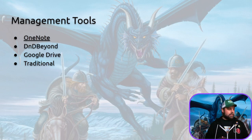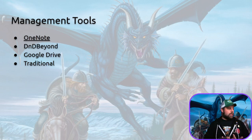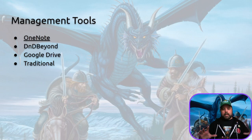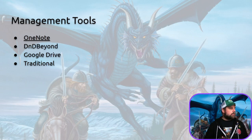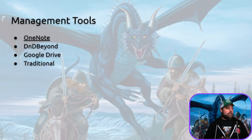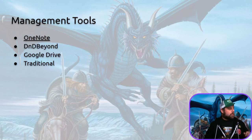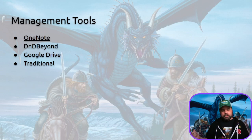World Anvil is a good one too. You can also use OneDrive from Microsoft, Dropbox, and all sorts of other things for sharing. Google Drive is nice because it's searchable and shareable. And then there's traditional pen, paper, and books — I've run online games with a book; it's messy but if you're used to it you can get away with it.